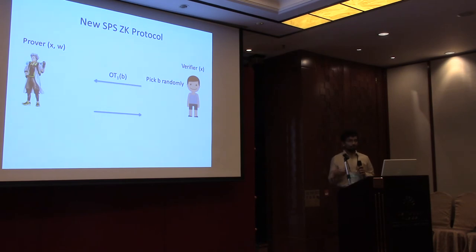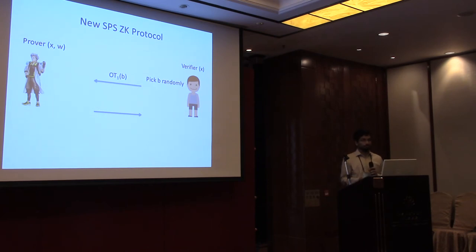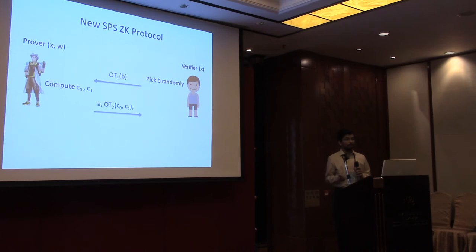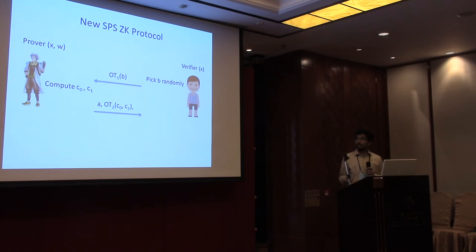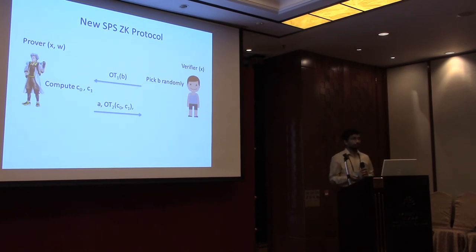Intuitively, the bit b is now hidden from the sender's point of view due to OT security. The sender can now sample the original first-round message A after receiving the receiver's OT message, and send it across along with C0 and C1. But instead of sending C0 and C1 in the clear — since the sender only wants to send one of them and doesn't know which — he hides them via the OT as well.